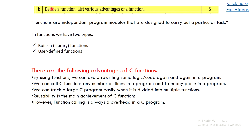There is a question to define what a function is and list its various advantages. Write that functions are independent program modules designed to carry out a particular task. Also mention the two types of functions: library (built-in) functions such as printf and scanf, and user-defined functions such as an 'add' function written to add two numbers. Then write the advantages of using functions in a C program. This should fetch you five marks.